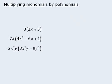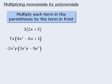Next we will examine the products of monomials and polynomials. When we multiply a polynomial by a monomial, the rule is to multiply each term inside the parentheses by the term in front.